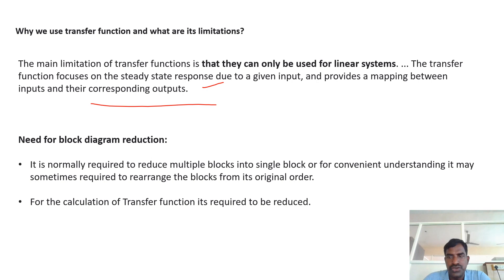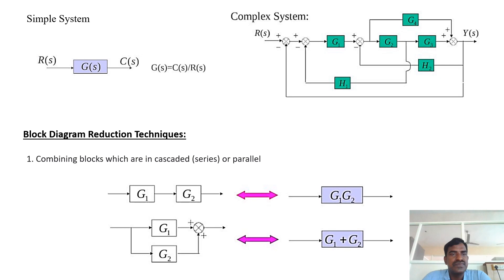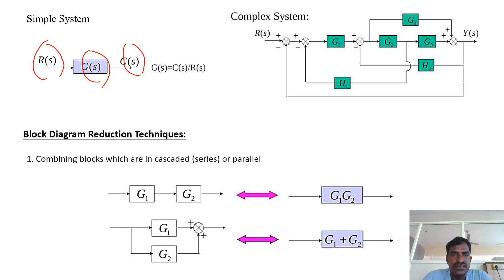Coming to block diagram — simple system. Here R(s) is the input and C(s) is the output. G(s) is the block, and G(s) is considered as the transfer function. The transfer function G(s) is nothing but C(s) divided by R(s), that means output by input.